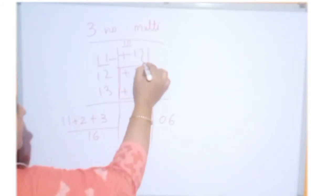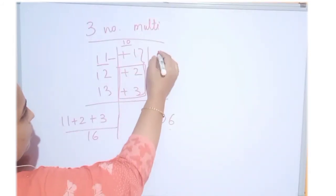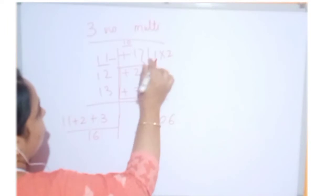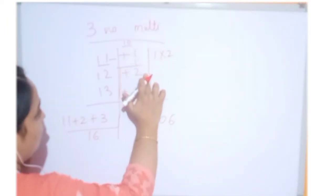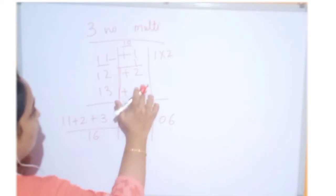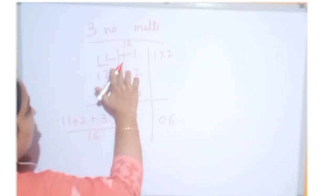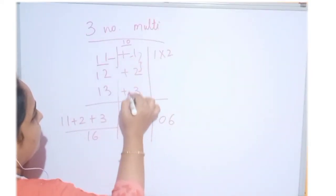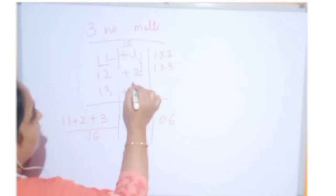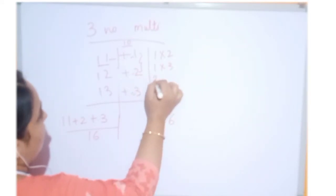What we have to do? We have to do the multiplication of enter this number. So, 1 into 2. This we got the multiplication. So, this and this pair we are making. Now, this and this pair we are making. Now, this and this we are making.